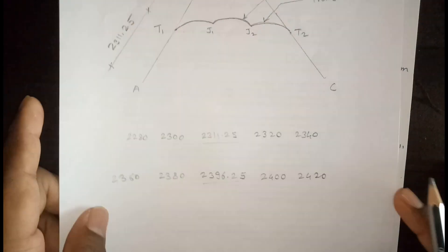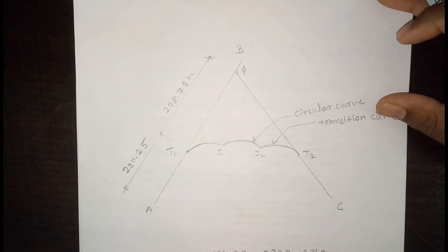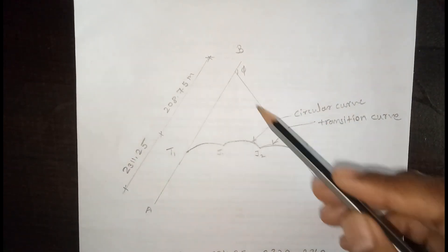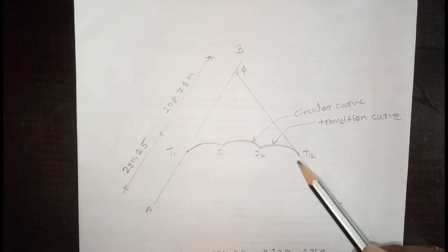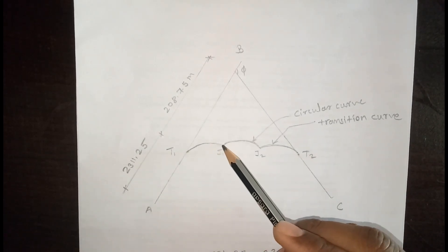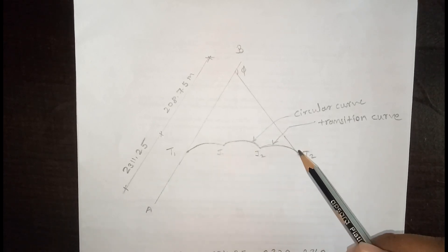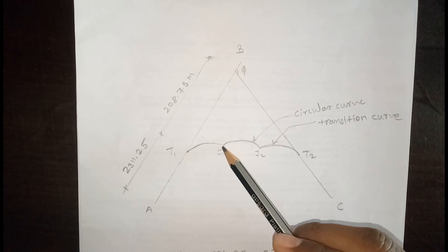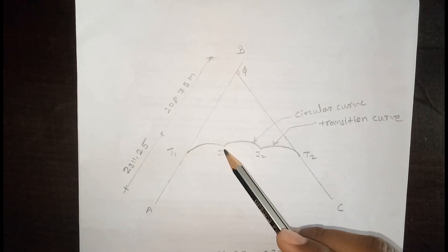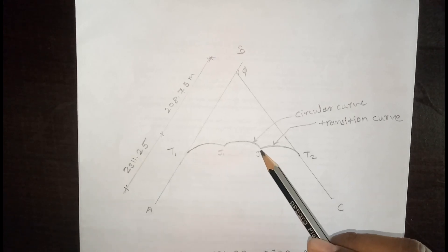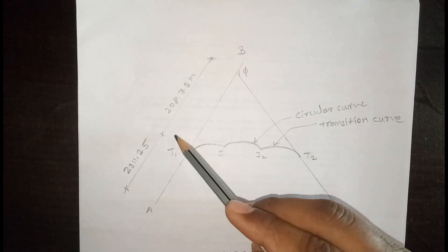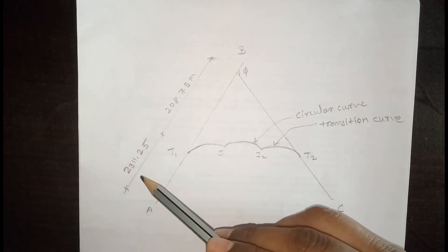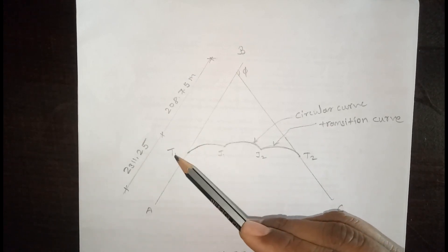The diagram shows straights AB and BC intersecting at B, with deflection angle shown. T1 and T2 are the tangent points. From T1, there is a transition curve, then the circular curve, and again a transition curve to T2. The transition curve length is 85 meters. J1 and J2 are the junction points where the circular curve and transition curves meet. The tangent length is 208.75 meters, giving chainage of T1 as 2311.25 meters.